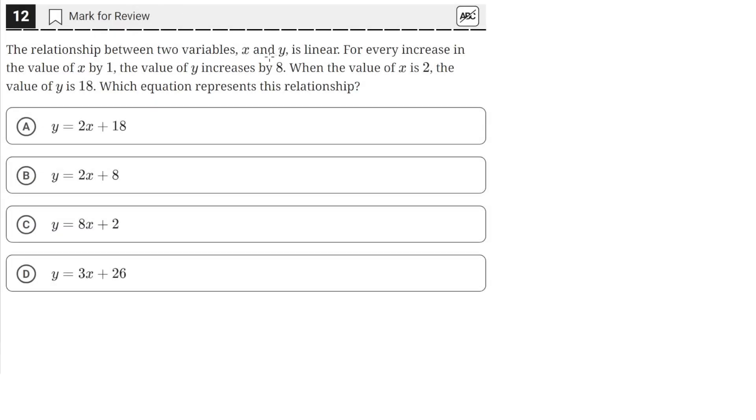The relationship between two variables, x and y, is linear. For every increase in the value of x by 1, the value of y increases by 8. When the value of x is 2, the value of y is 18. Which equation represents this relationship?